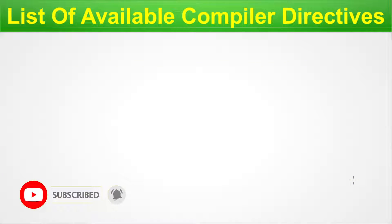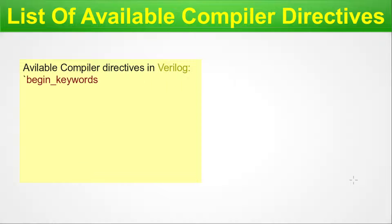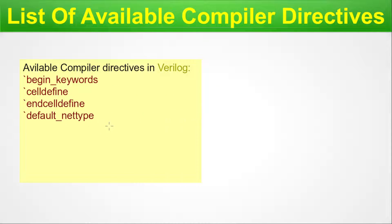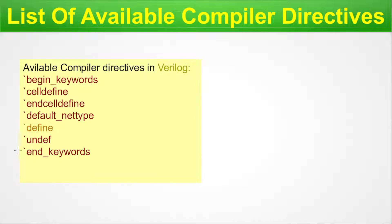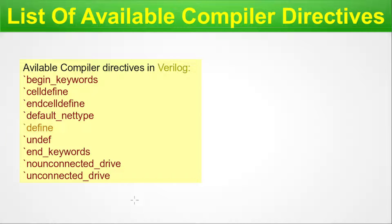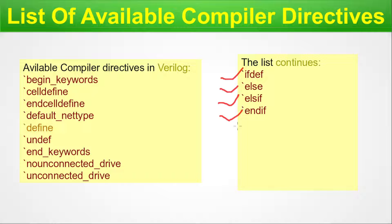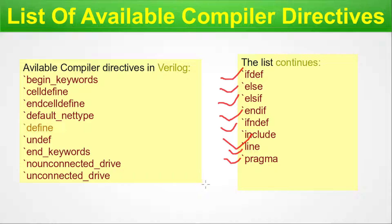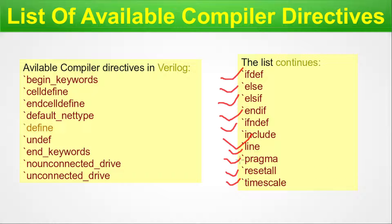List of available compiler directives in Verilog: begin keywords, cell define, end cell define, default net type, define, undef, end keywords (paired with begin keywords), noun connected drive, unconnected drive (also paired), ifdef, else, elseif, endif, if undef, include, line, pragma, reset all, and time scale. Define and undef are paired; begin keywords and end keywords are paired; noun connected drive and unconnected drive are also paired. We have already made a detailed episode on backtick time scale since it is hugely used in Verilog design — the link is given in the description.